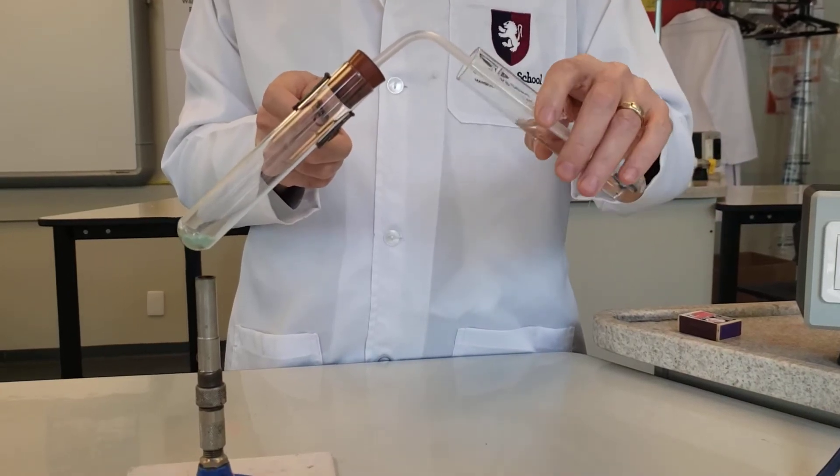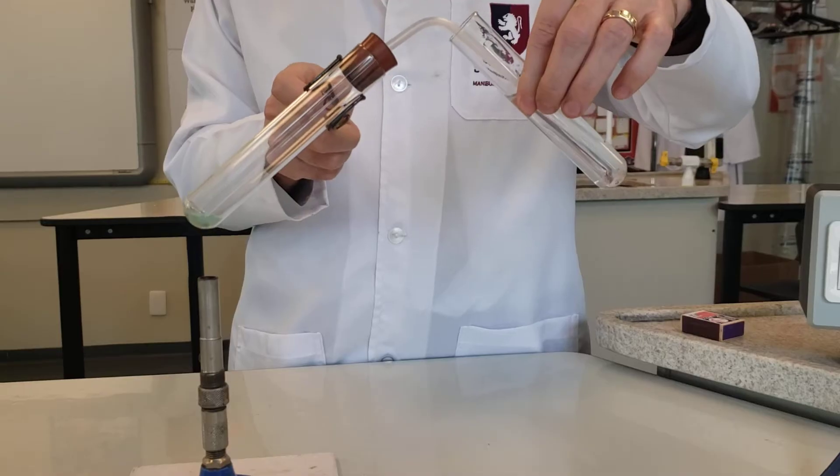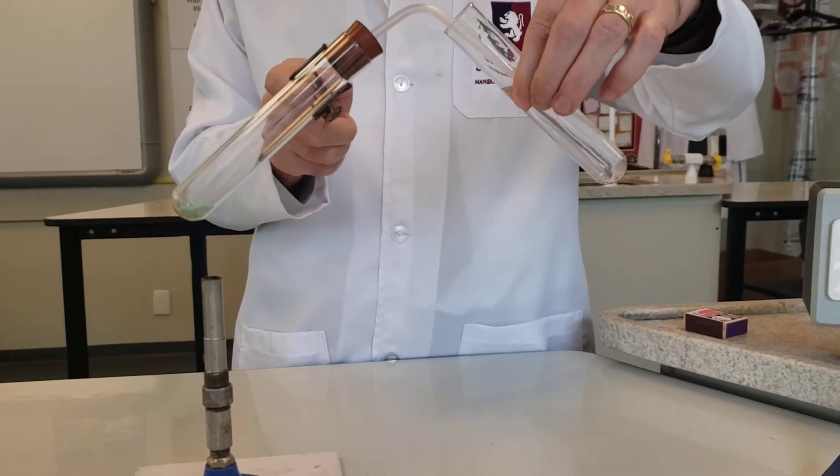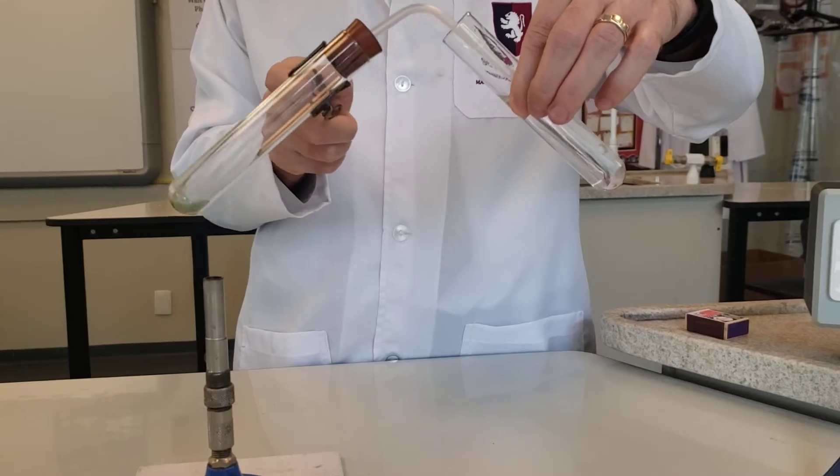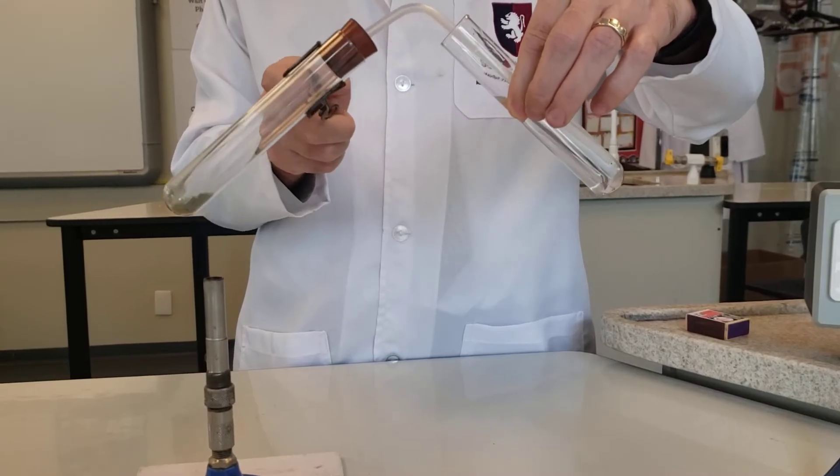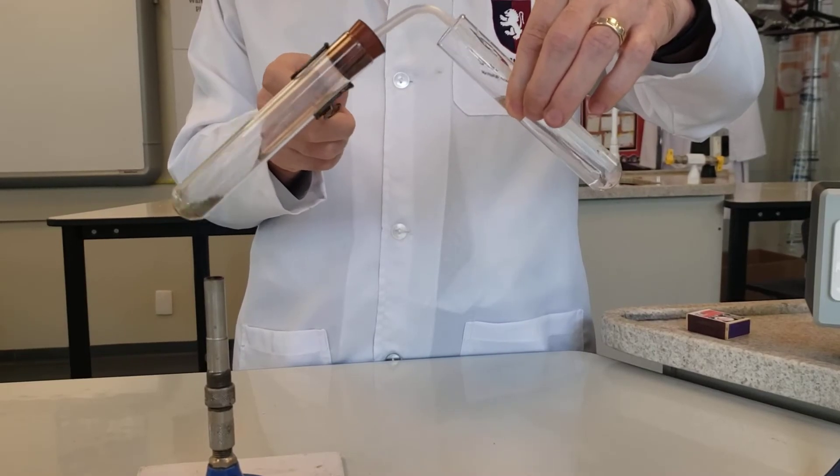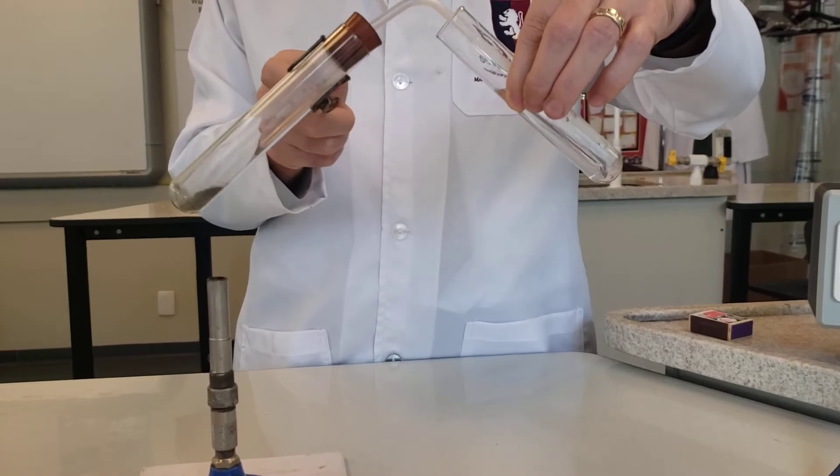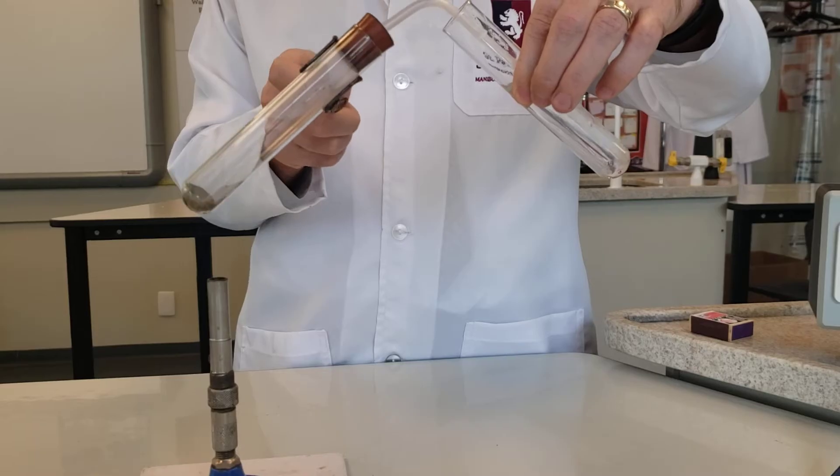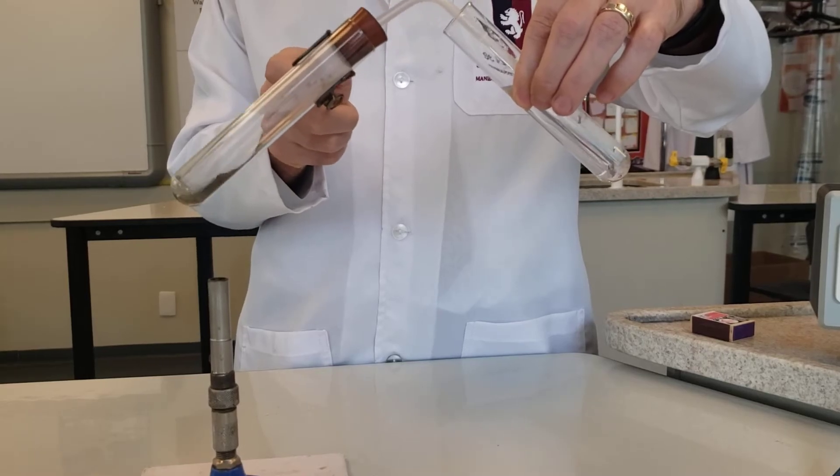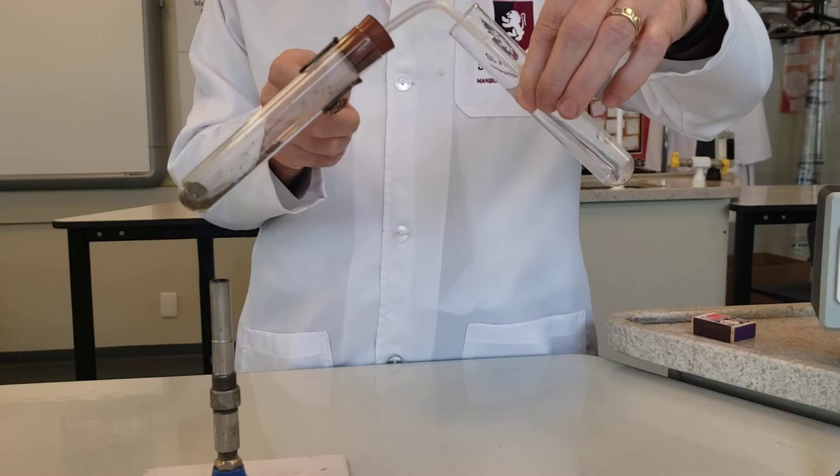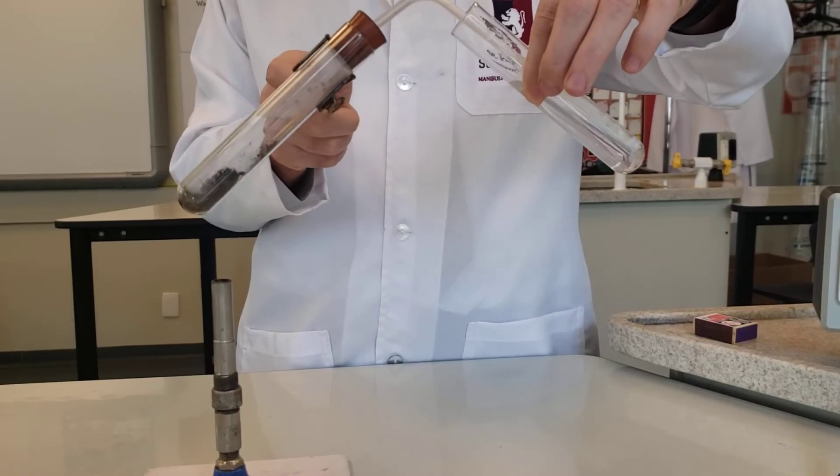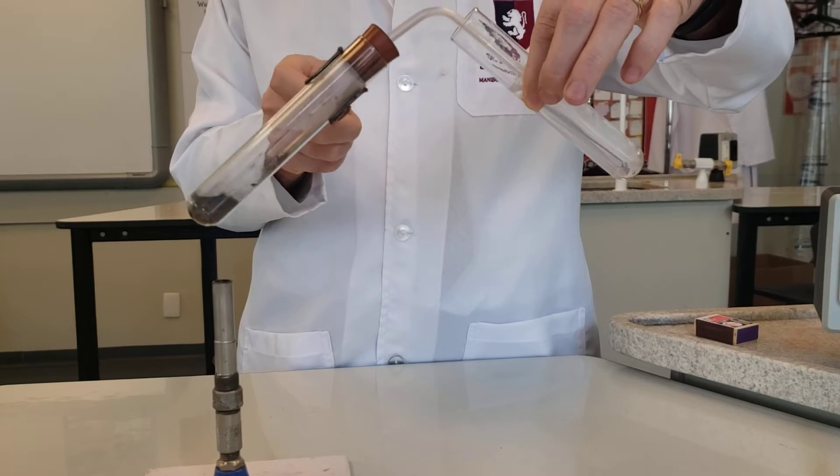The first few bubbles that come out of the tube are not gas being produced. It's just expansion of the air inside the tube. And quickly you can see that my copper carbonate is changing colour. It's going from a light green colour to a dark black colour. And now I've got quite strong bubbling through into the lime water.